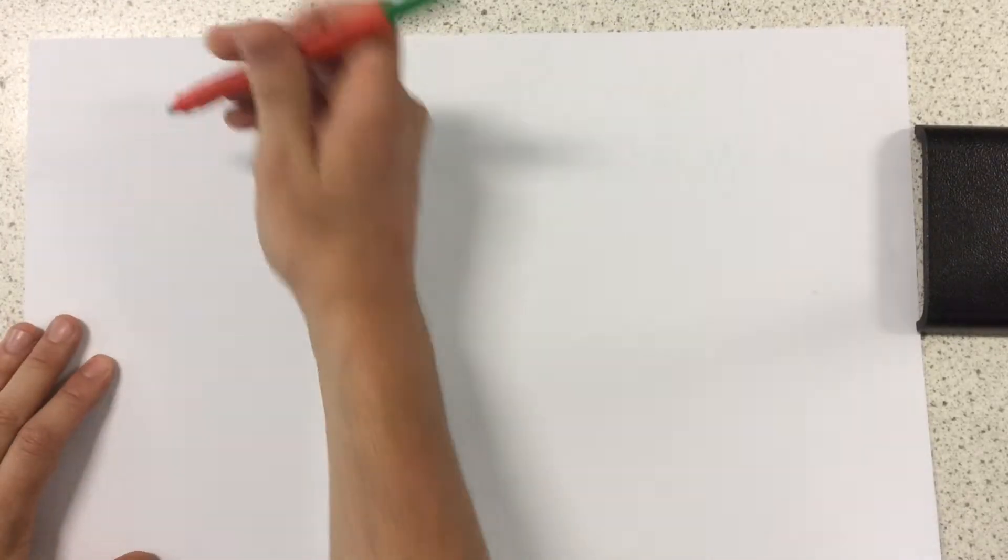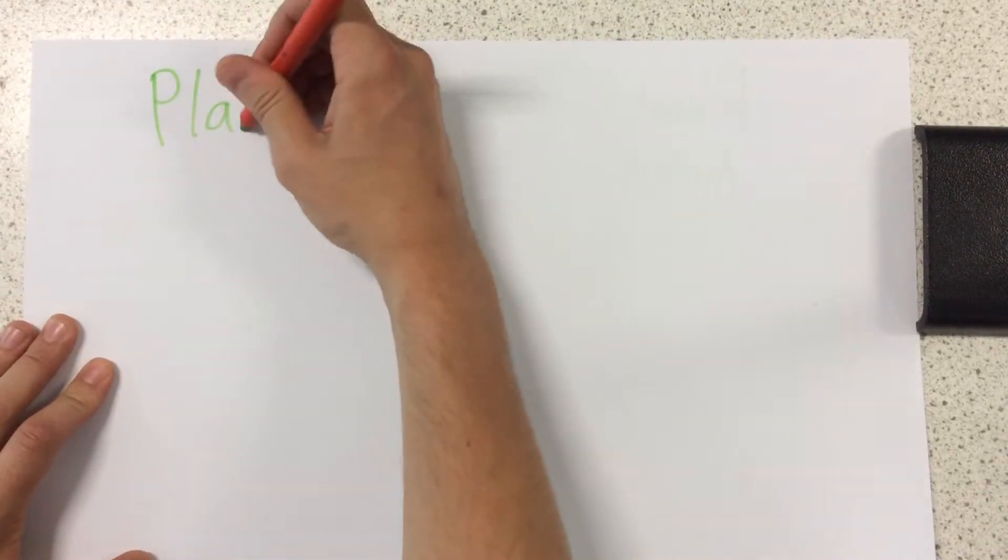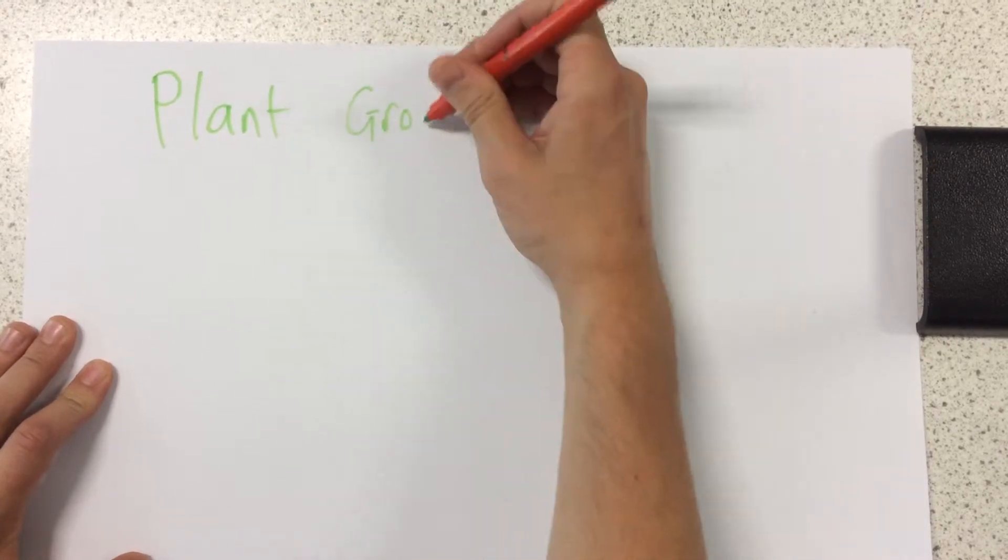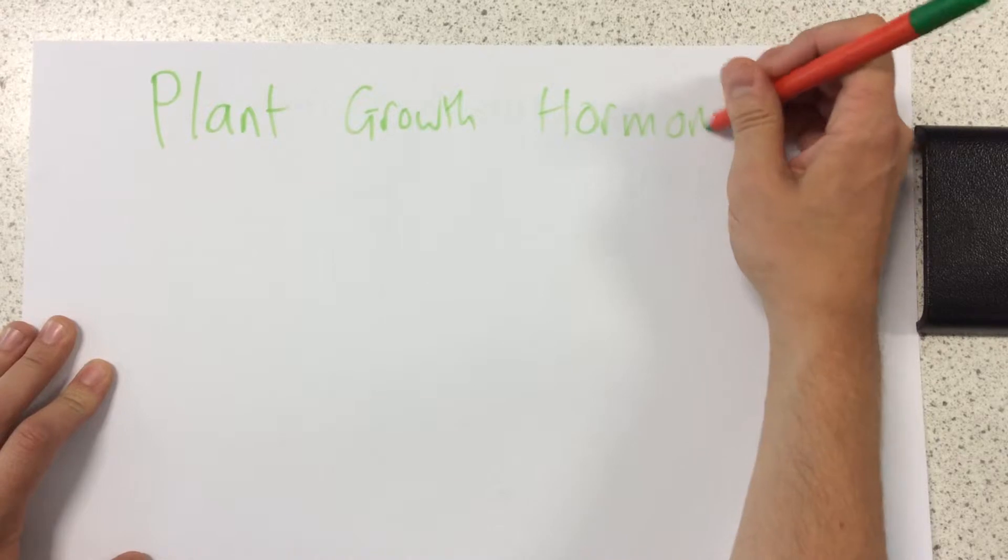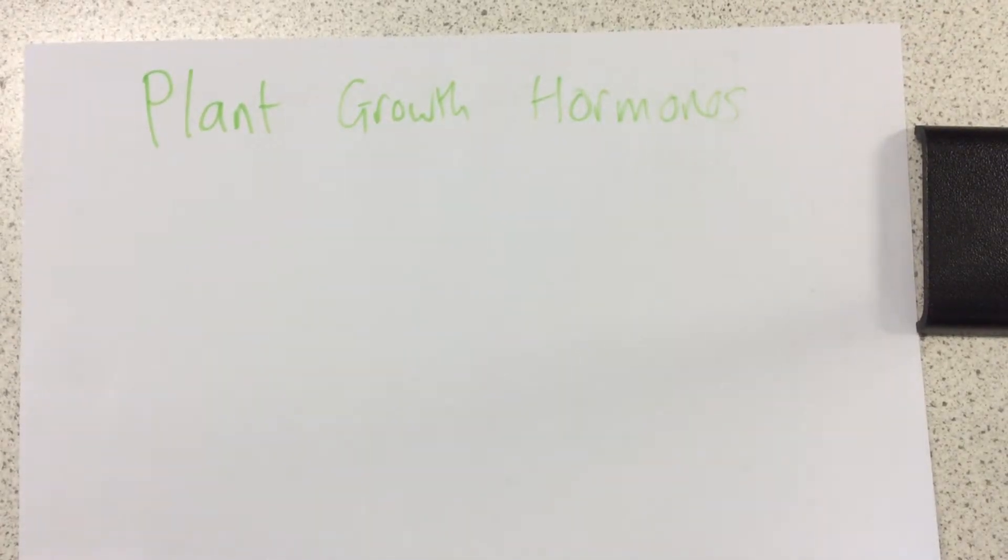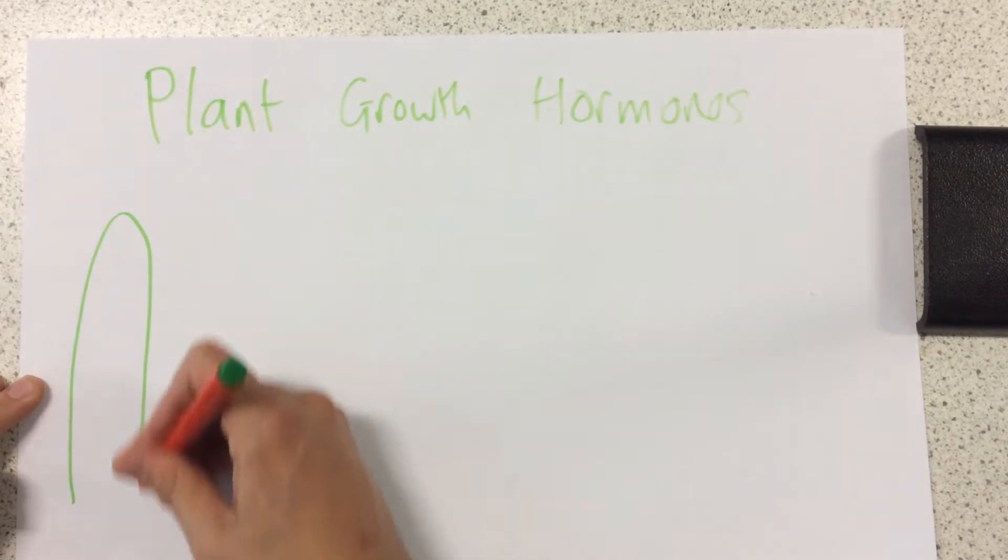Okay, today I'm going to talk to you about something in B1 called plant growth hormones. Now what these growth hormones are in plants, they are these things that allow the plant to grow.